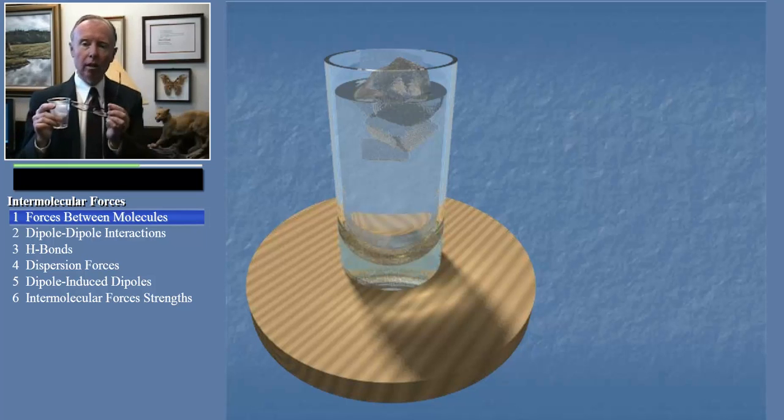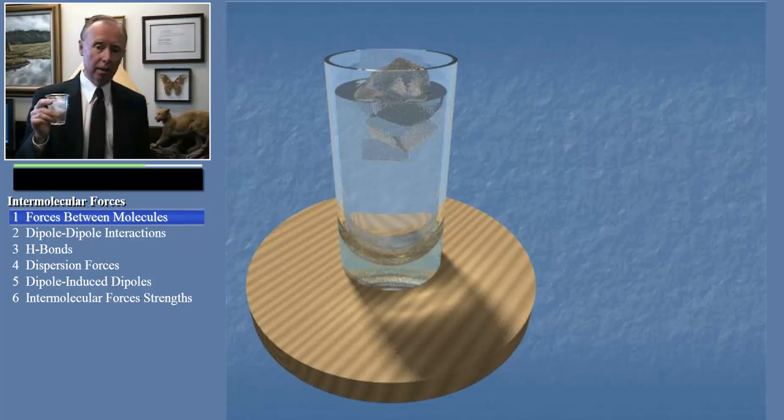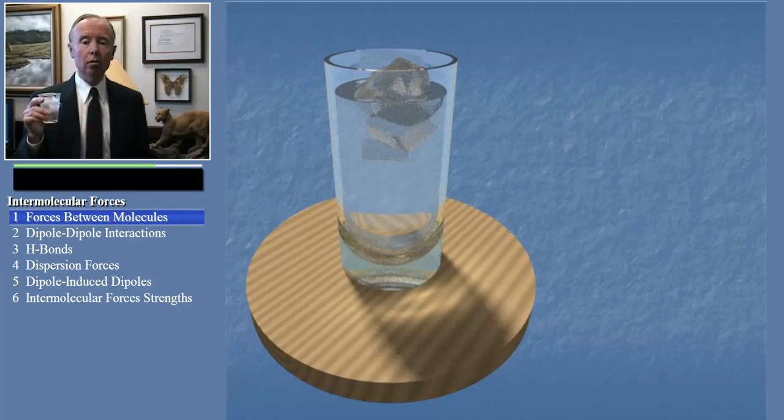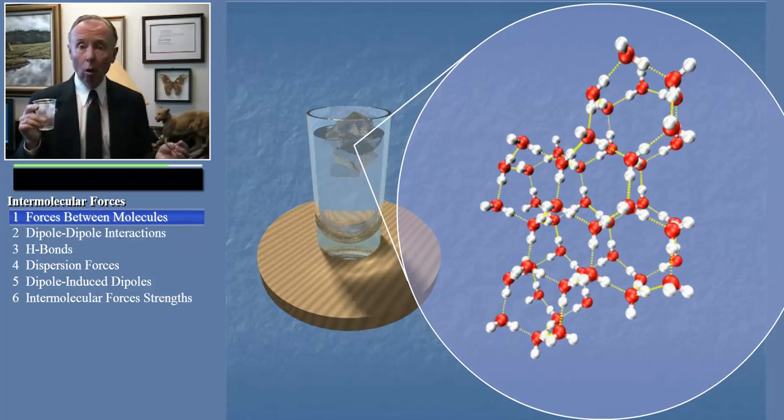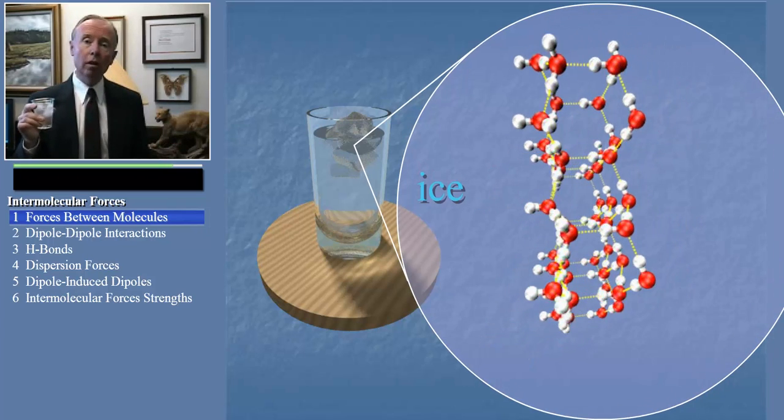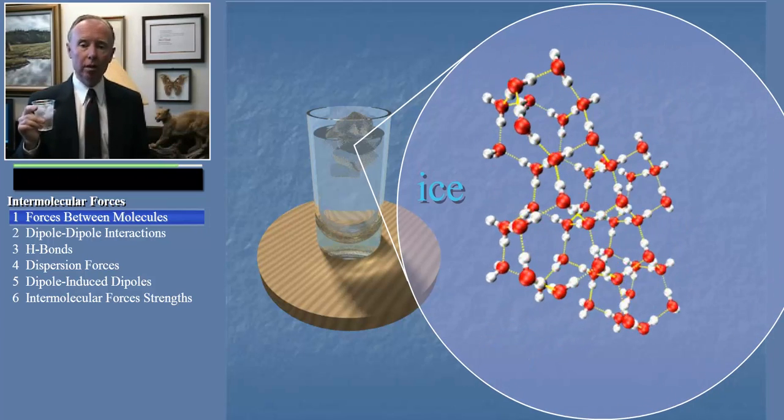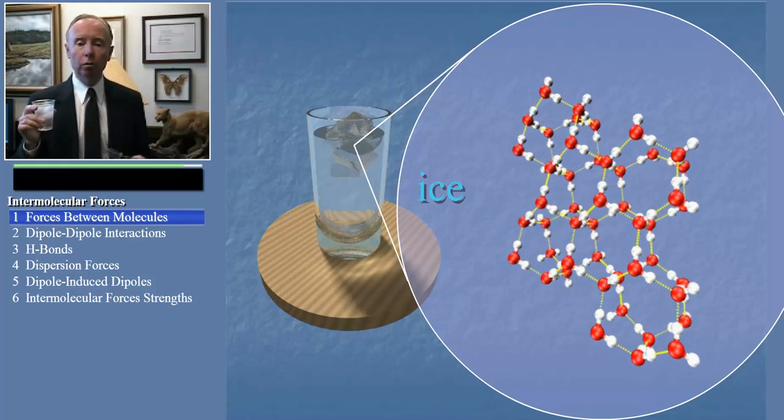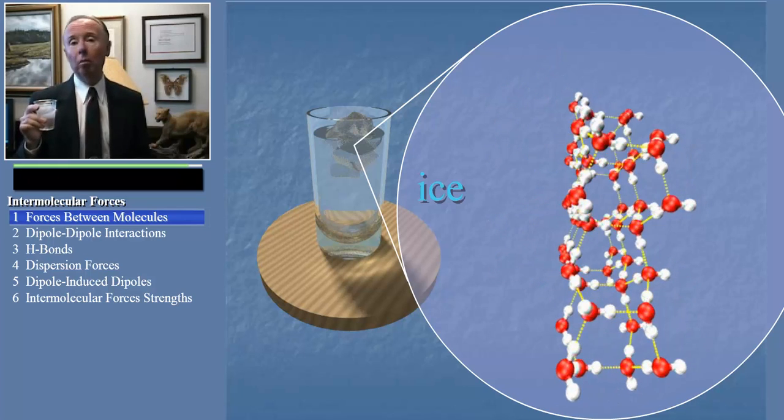And the only reason that ice floats, that is the only reason it's less dense than liquid water, is because these forces hold the water molecules in a three-dimensional pattern that leaves big holes. And that's a good thing, because otherwise our lakes and oceans would have frozen solid from the bottom up long ago.